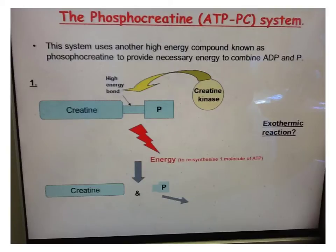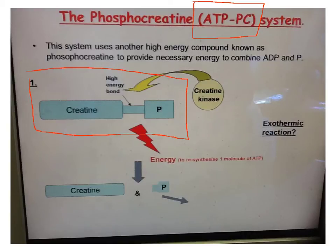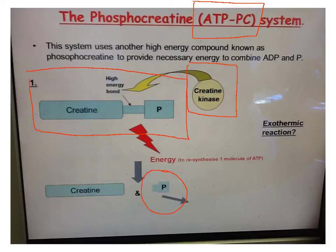What we're interested in today is looking at how the ATP-PC energy system re-synthesizes that ATP. With any energy system, what you need to re-synthesize ATP is a fuel, and our fuel in the ATP-PC system is phosphocreatine. What happens with that phosphocreatine is that we have an enzyme present — creatine kinase. That creatine kinase acts as a catalyst for that phosphate compound to be broken off, and that breaking off of the bond gives us enough energy to re-synthesize one molecule of ATP.